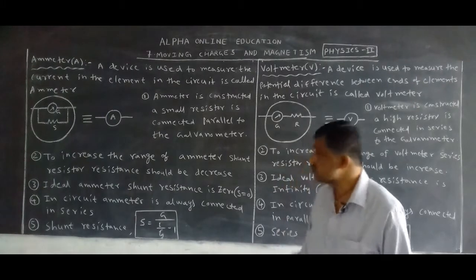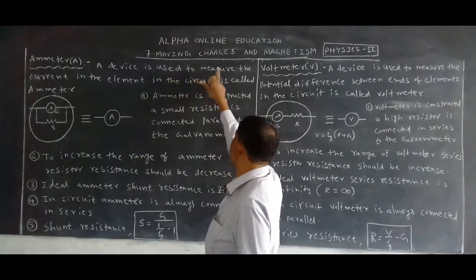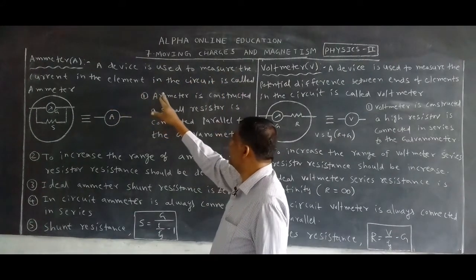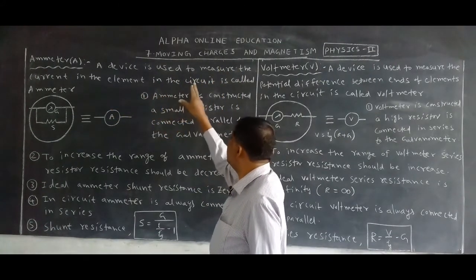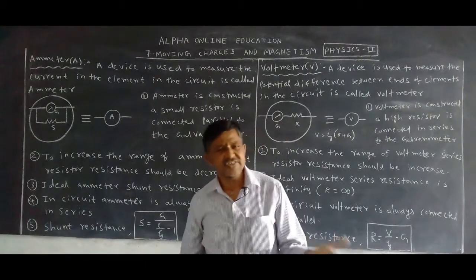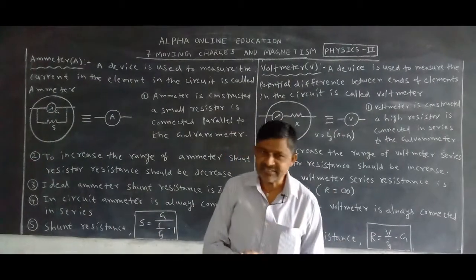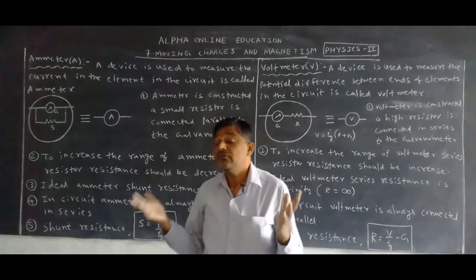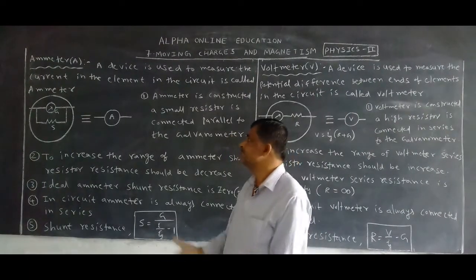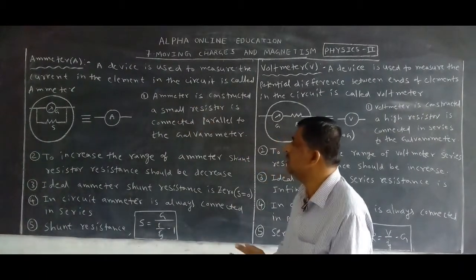Now, first — ammeter. A device used to measure the current in the elements in the circuit is called an ammeter. Elements means resistors and batteries present in the circuit. How much current is passing through the elements is measured by this device called ammeter.